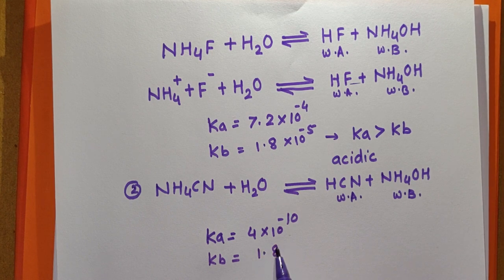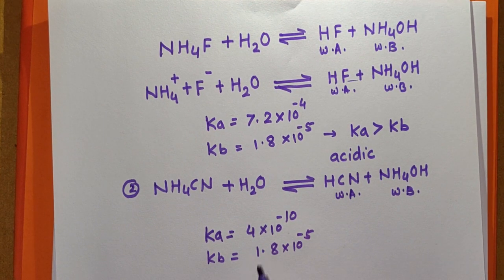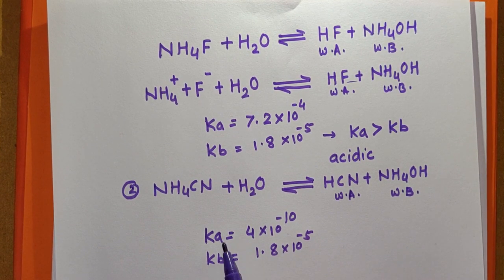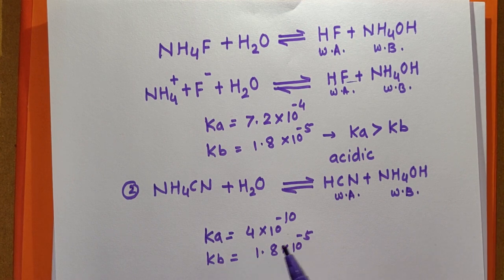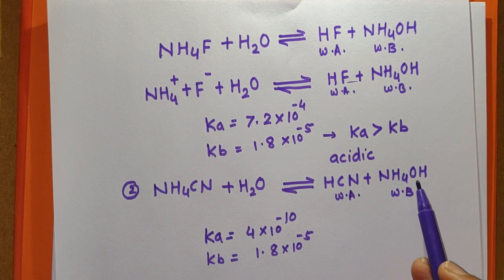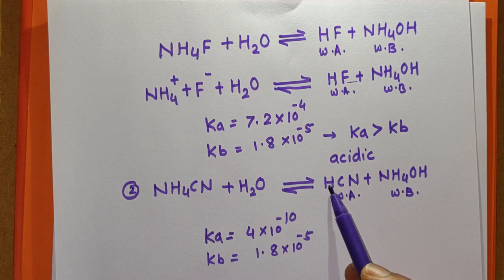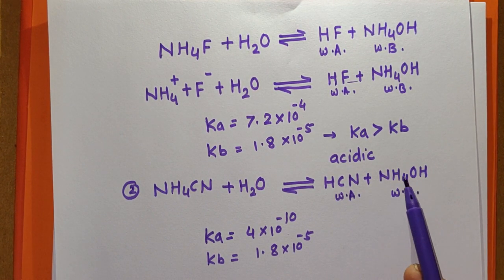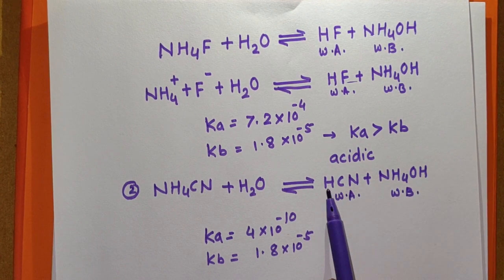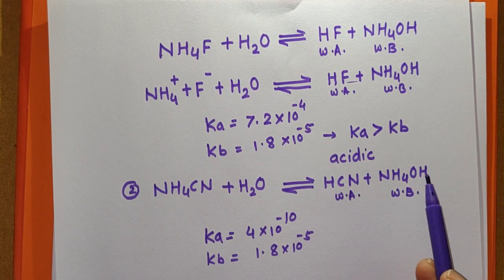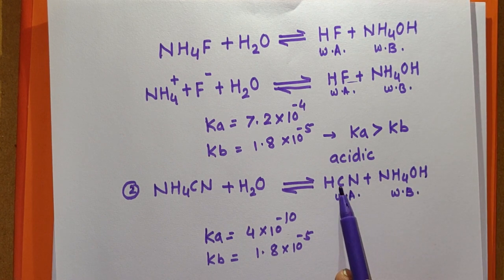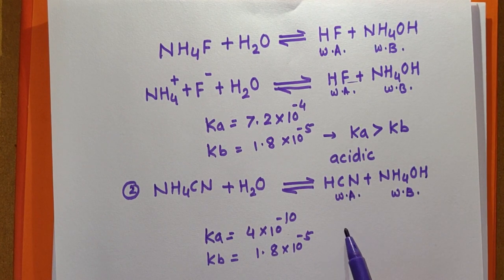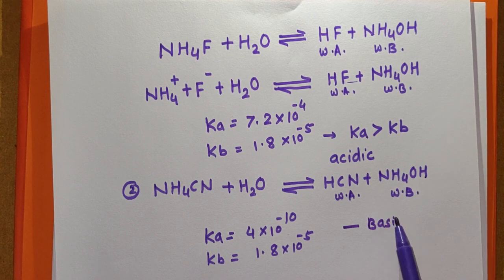The Kb for NH₄OH is 1.8 × 10⁻⁵. Comparing these values, Kb > Ka, so the concentration of OH⁻ ions will be greater than H⁺ ions. The ionization of NH₄OH occurs to a greater extent than that of HCN, so the concentration of OH⁻ ions exceeds H⁺ ions and the solution is basic in nature.